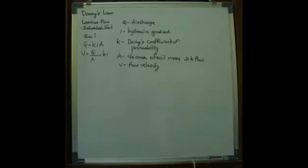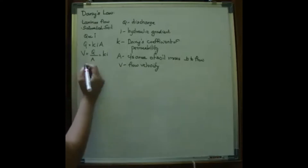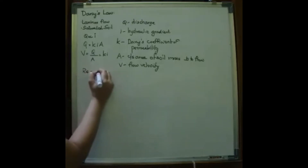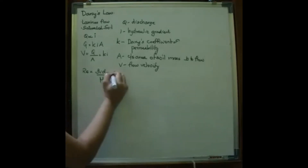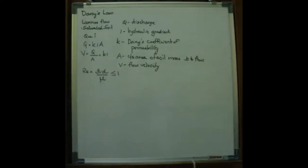The validity limits of Darcy's Law are fixed based on particle size, velocity of flow, and hydraulic gradient. Based on experimental results, the Reynolds number must be less than or equal to unity. The Reynolds number R equals rho times D times velocity divided by viscosity, and R should be less than or equal to 1. That is why Darcy's Law is valid for laminar flow.